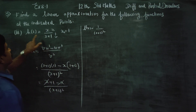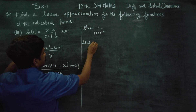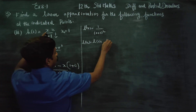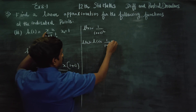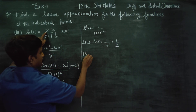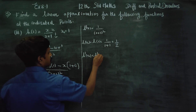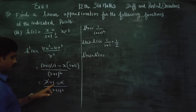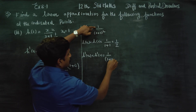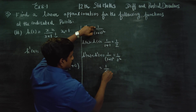Since x₀ = 1, find h(x₀) = h(1) = 1/(1+1) = 1/2. Then find h'(x₀) = h'(1) = 1/(1+1)² = 1/2² = 1/4.